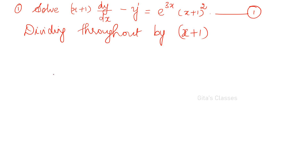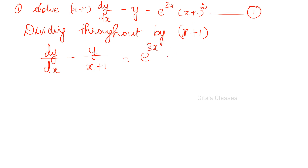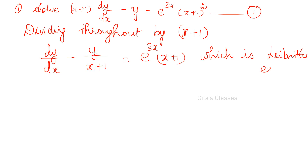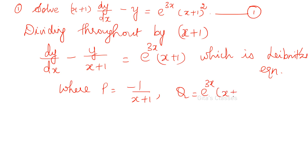Dividing throughout by (x+1), we get equation (1). It is linear in y, so our solution should be y as a function of x. Dividing gives: dy/dx minus y/(x+1) equals e^(3x)·(x+1)²/(x+1), which simplifies to dy/dx minus y/(x+1) equals e^(3x)·(x+1). This is Leibniz's linear equation, where P equals −1/(x+1) and Q equals e^(3x)(x+1).